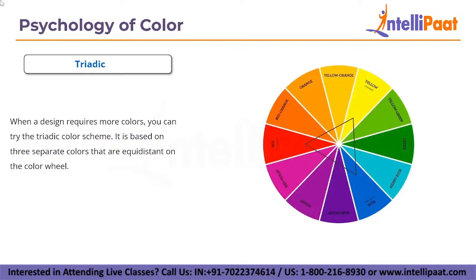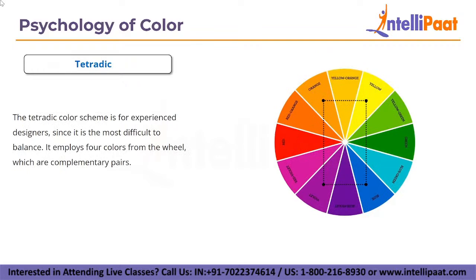When design requires more colors, you can try the triadic scheme. It is based on three separate colors that are equidistant on the color wheel. To maintain balance with this scheme, it is recommended to use one color as dominant and the other colors as accents.